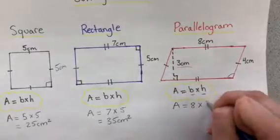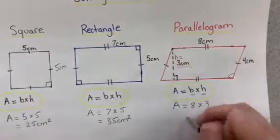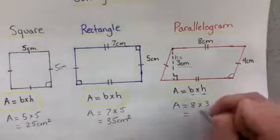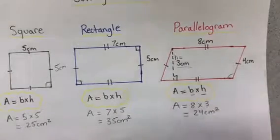Therefore, 3 centimeters is our height. 8 times 3 gives us 24 centimeters squared.